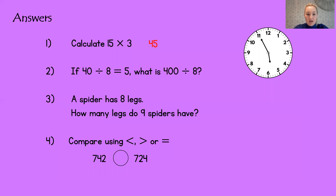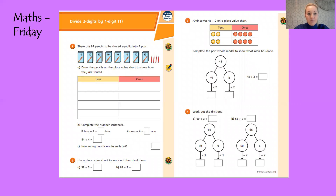The first answer should be 45. The second one is 50 — you are multiplying your answer by 10, which we've done this week. With multiplication, you just apply the same rule with division. The third one, the answer should be 72 legs. The last one, the crocodile is eating the 742 because in the tens column the 40 is bigger than the 20 in 724.